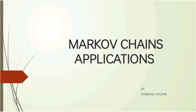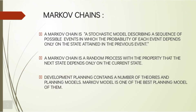Markov Chain is a stochastic model describing a sequence of possible events in which the probability of each event depends only on the state attained in the previous event. A Markov Chain is a random process with the property that the next state depends only on the current state.